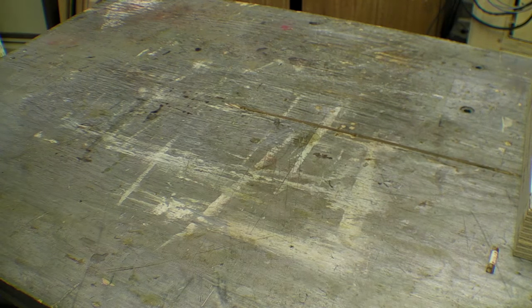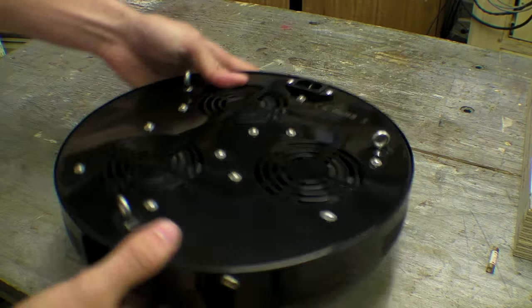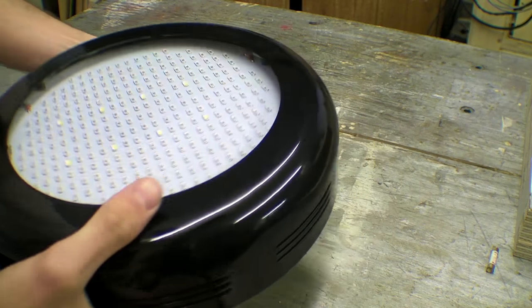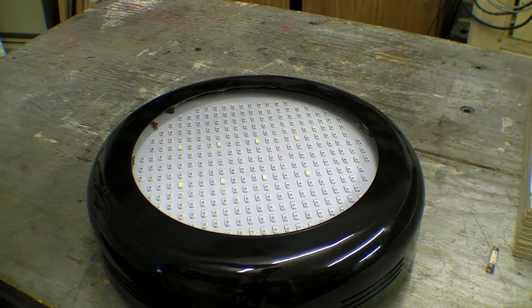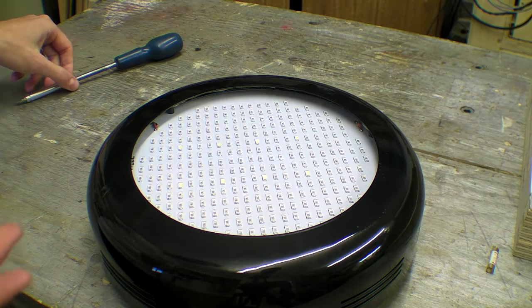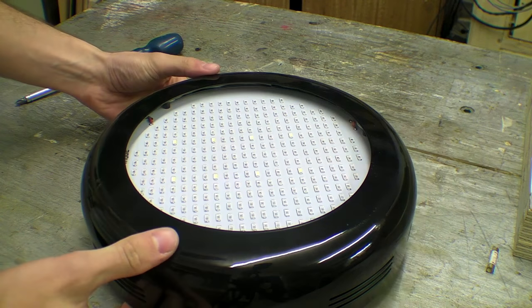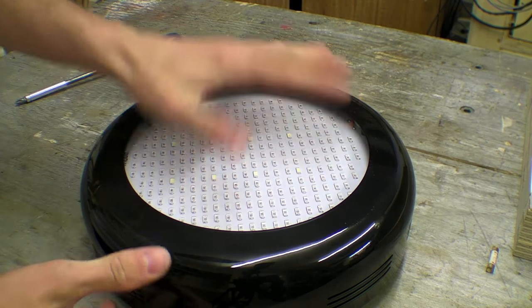Ok the final thing that I want to do is add this UFO grow light. I'm just going to open it up to the area where the plants are going to be kept. Just because there's not enough light coming in through the window and I think this will help them maintain.